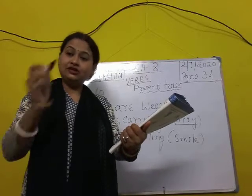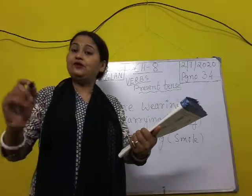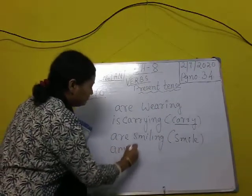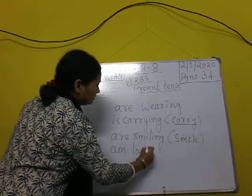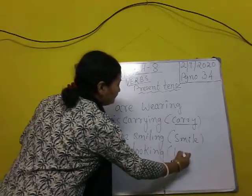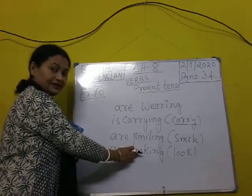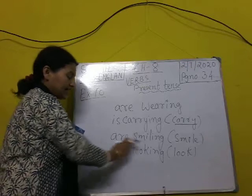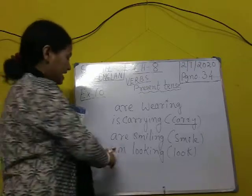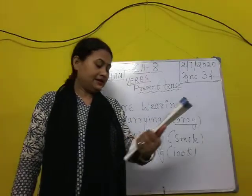I dash look into the camera. So we write: I am looking — L-O-O-K-I-N-G — from the root word 'look'. 'I' is already given in the paragraph, so we write 'am looking'. I am looking into the camera.